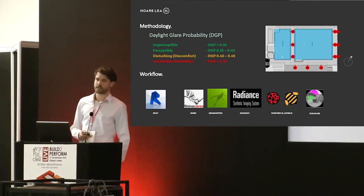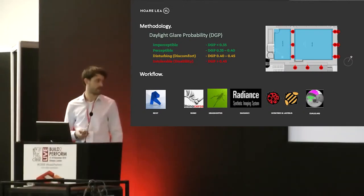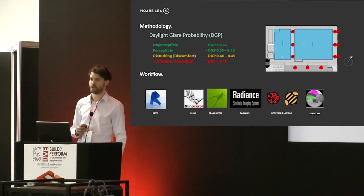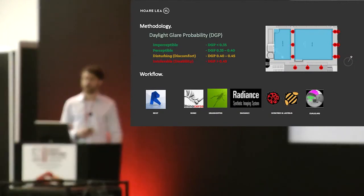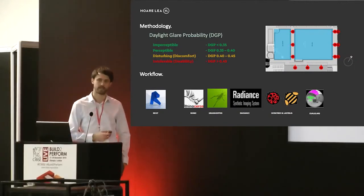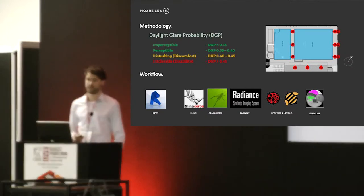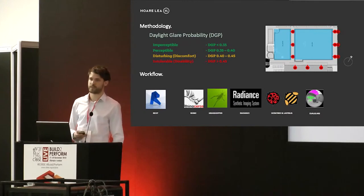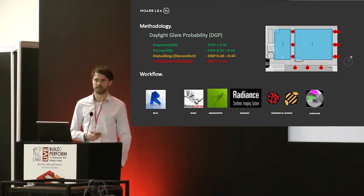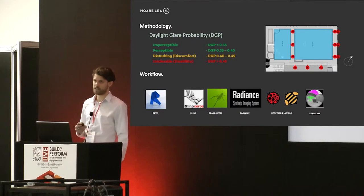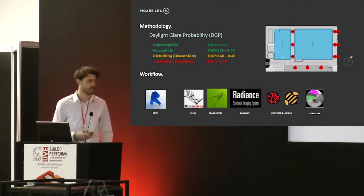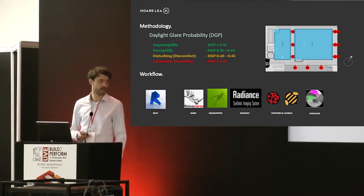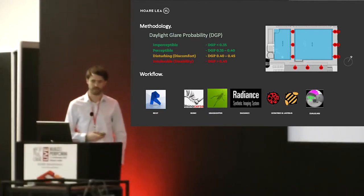For the workflow, we received the model in Revit and then Rhino and Grasshopper were used to clean up the model and separate it into layers to get ready to run a daylight analysis. Radiance was then used to create specific material definitions in order to as realistically visualise the interior environment. Honeybee, Ladybug, and EvalGlare were then used to run the simulations and post-process the images.